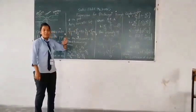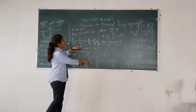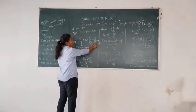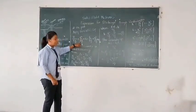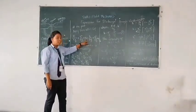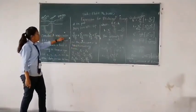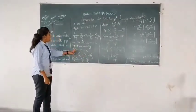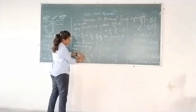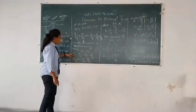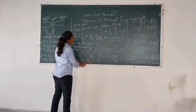Now by applying Bernoulli's equation, as we know the Bernoulli's equation is P1/ρg + V1²/2g + Z1 = P2/ρg + V2²/2g + Z2. Since the pipe is horizontal, Z1 equals Z2, so it becomes (P1 - P2)/ρg = V2²/2g - V1²/2g.